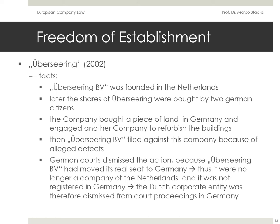Next we turn to the Überseering case. The Überseering BV, a Dutch besloten vennootschap, was founded in the Netherlands and its shares were bought by two German citizens. The company bought a piece of land in Germany and engaged Nordic Construction Baumanagement GmbH, a German company, to refurbish a garage and a motel on the property. However, Überseering then sued for damages because of allegedly defective works. The German courts dismissed the action because Überseering had moved its real seat to Germany and had not gone through the proceedings to register as a German company. Because it was no longer a company of the Netherlands and not registered in Germany, it did not possess legal capacity and could not bring legal proceedings in Germany.